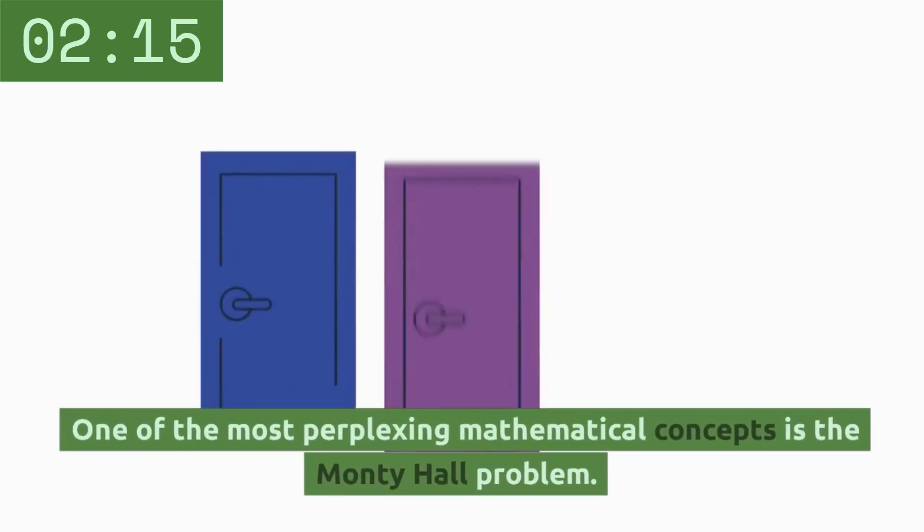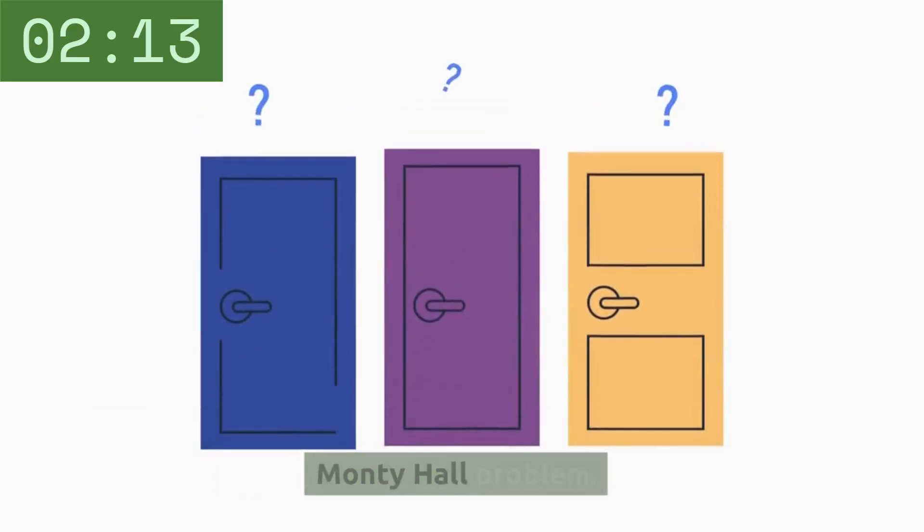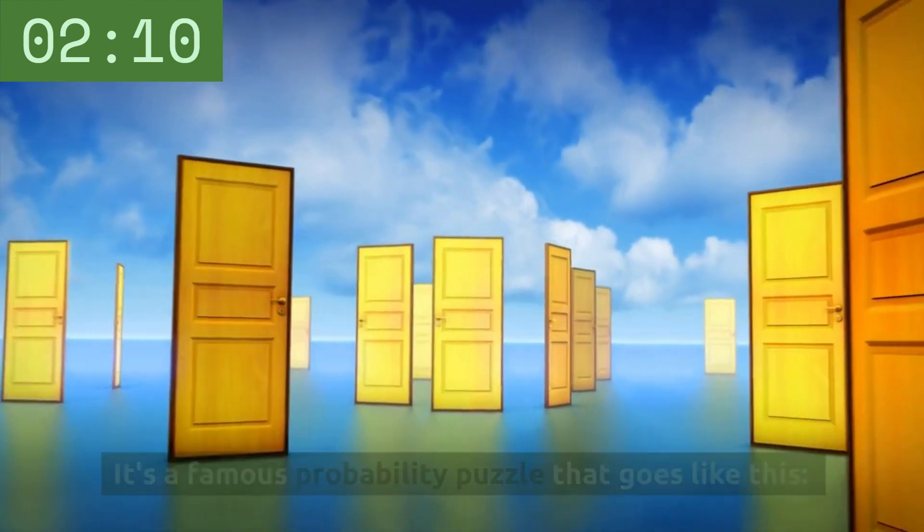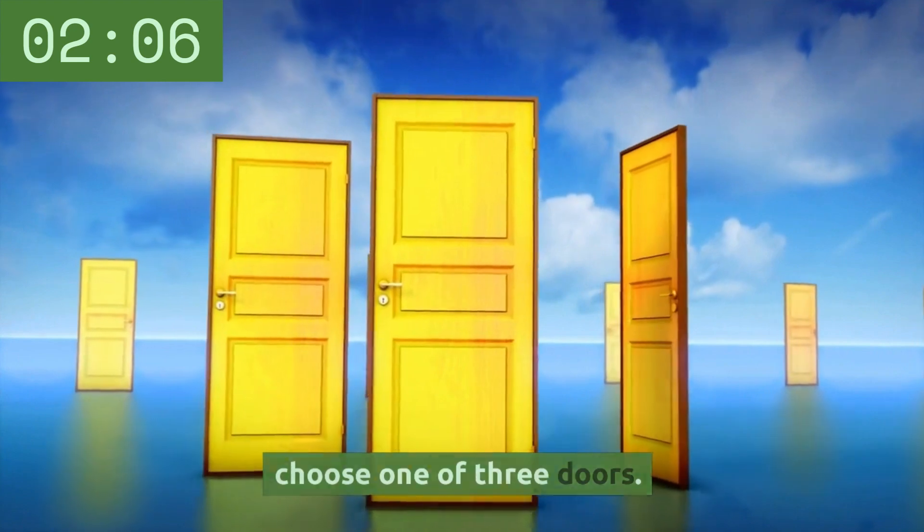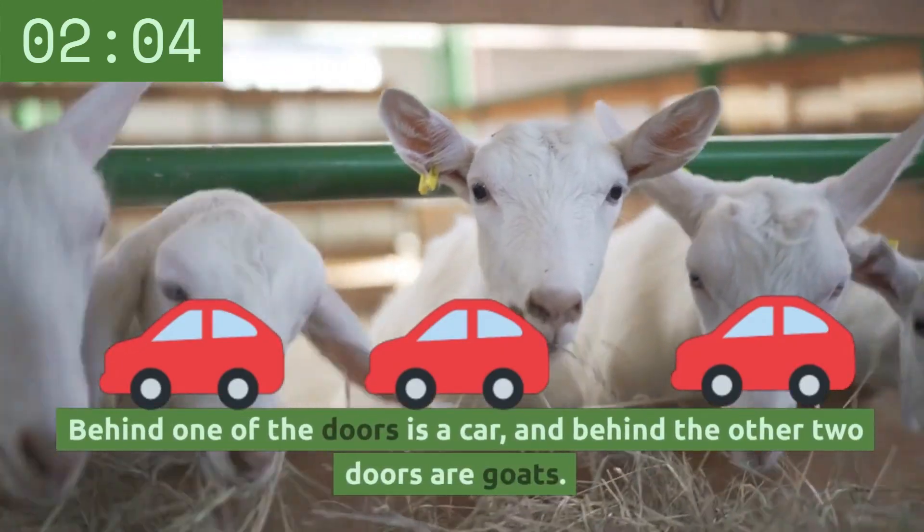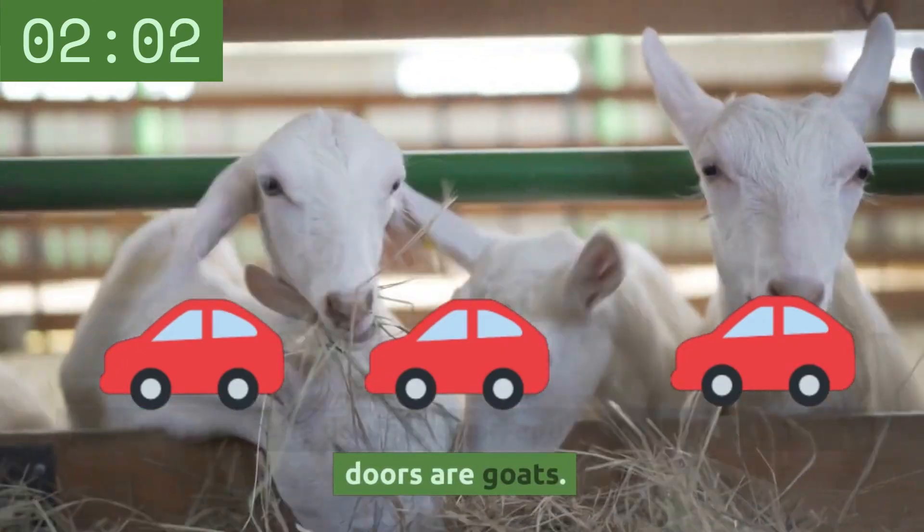One of the most perplexing mathematical concepts is the Monty Hall problem. It's a famous probability puzzle that goes like this. You're a contestant on a game show, and you're asked to choose one of three doors. Behind one of the doors is a car, and behind the other two doors are goats.